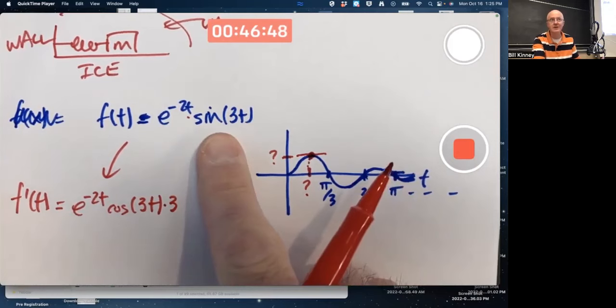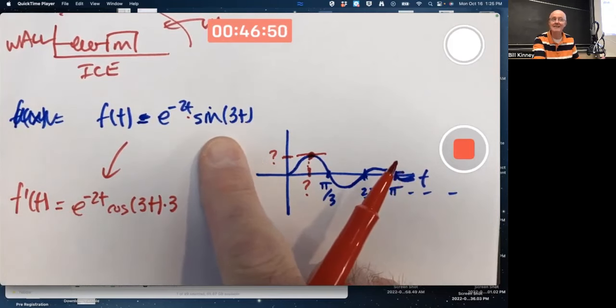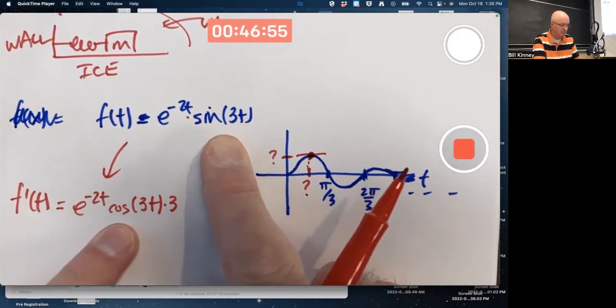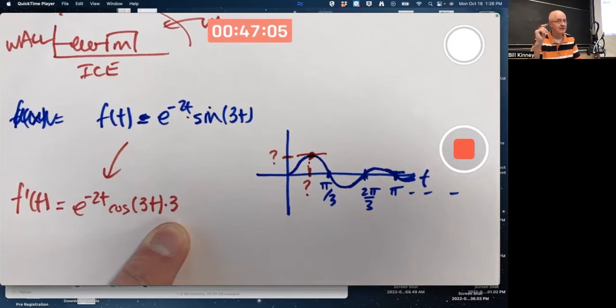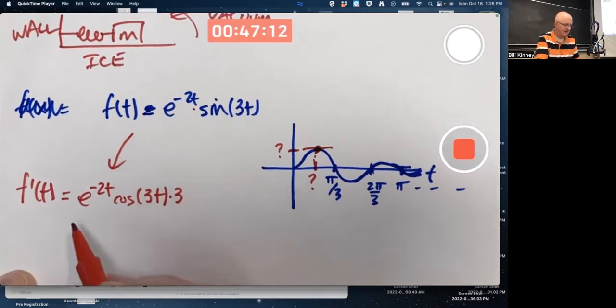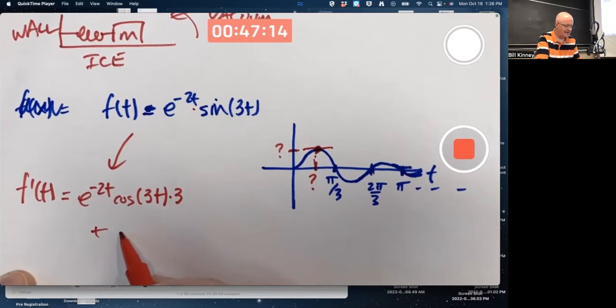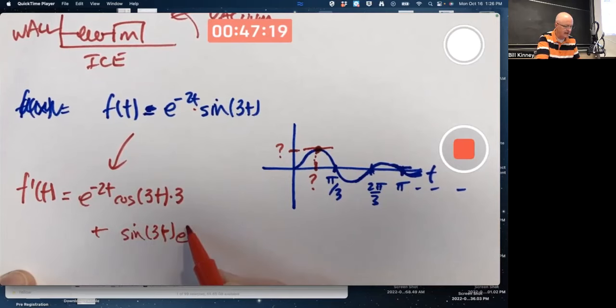Sine of 3t is a composition. 3t is the inside function. Sine is the outside. The derivative of the outside, sine, is cosine, but plug in the inside, then multiply times the derivative of 3t, the inside function. You want to get pretty fast at the chain rule. Yes, you want to be accurate. That's very important, but you also want to get better at going faster. That's left d right, plus right d left, with the derivative of e to the negative 2t. I need the chain rule again. Again, I get a factor of negative 2.